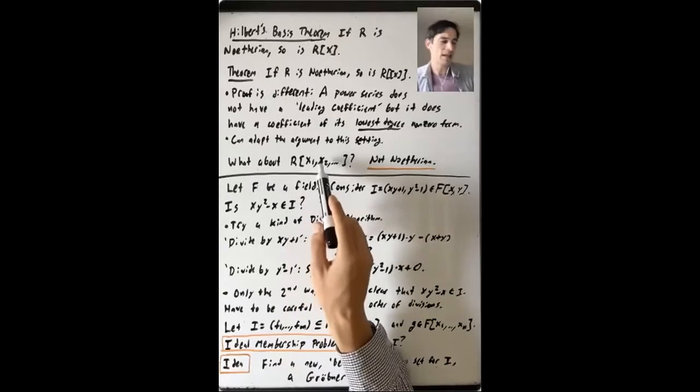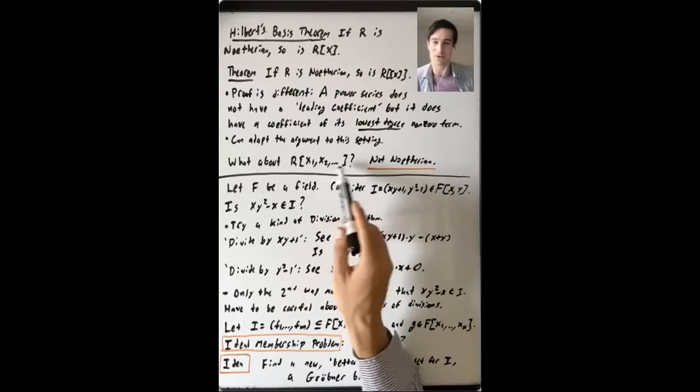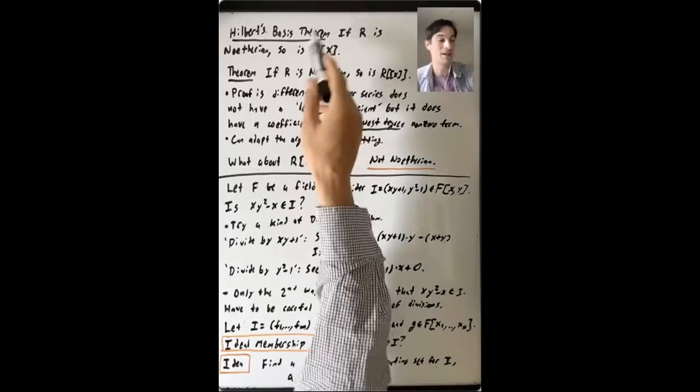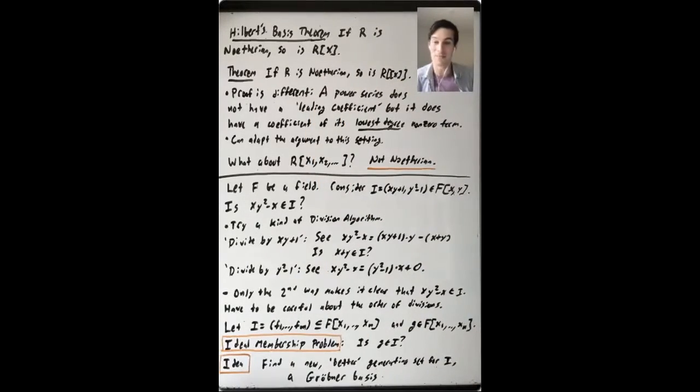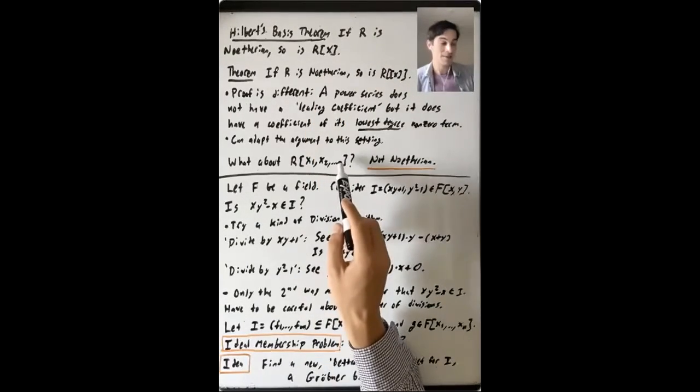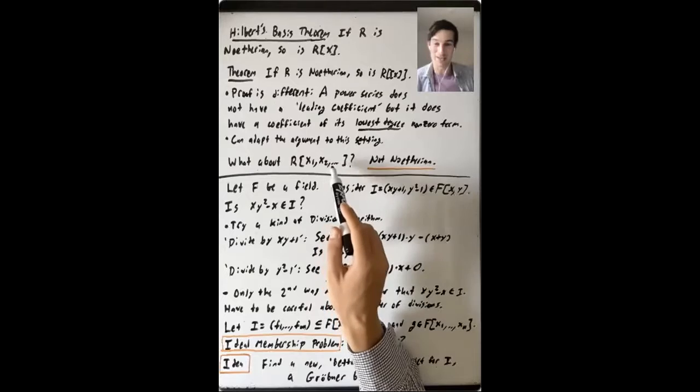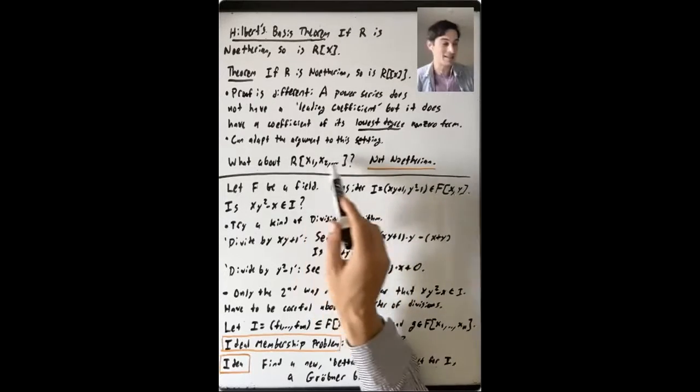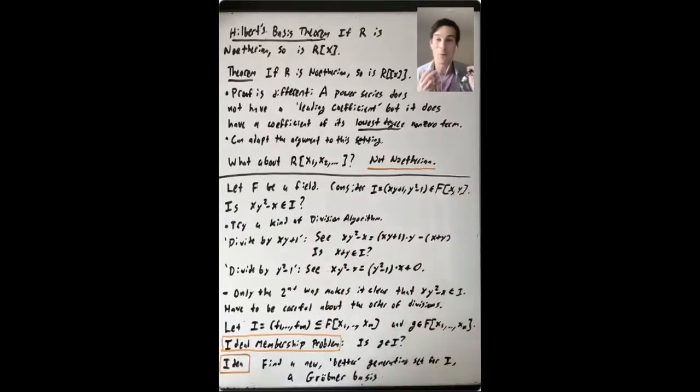But what if you take the polynomial ring in arbitrarily many variables? I didn't mention that when we talked about the Hilbert basis theorem, because the argument doesn't work here because the corresponding statement is just not true.